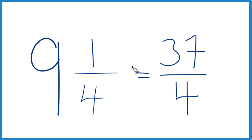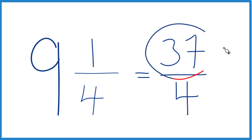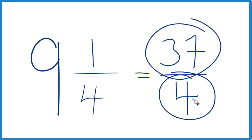Let's do it again. 9 times 4 is 36. 36 plus 1 gives us 37 — that's the numerator. Then we just bring the 4 across for the denominator.